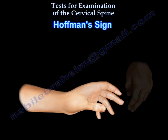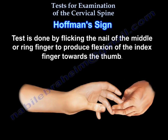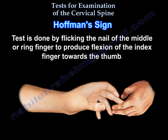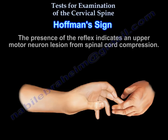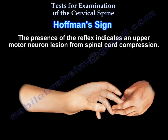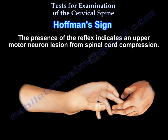Hoffman Sign. The test is done by flicking the nail of the middle or ring finger to produce flexion of the index finger to the thumb. The presence of the reflex indicates an upper motor neuron lesion from spinal cord compression.